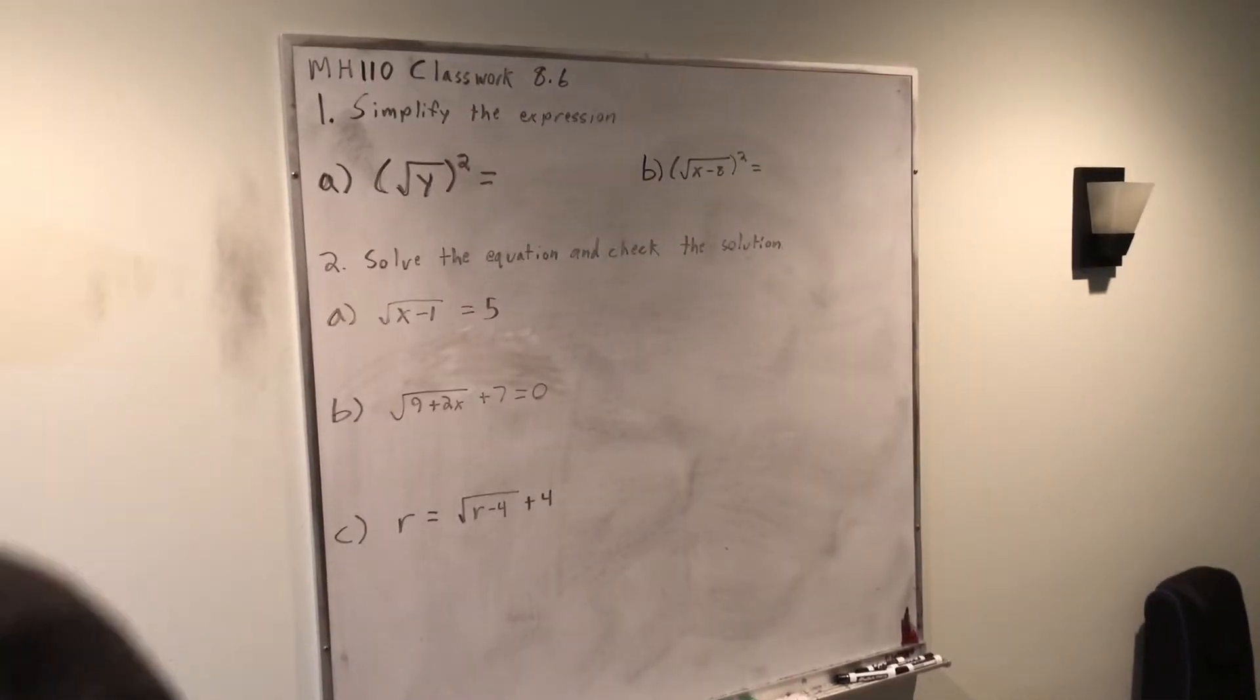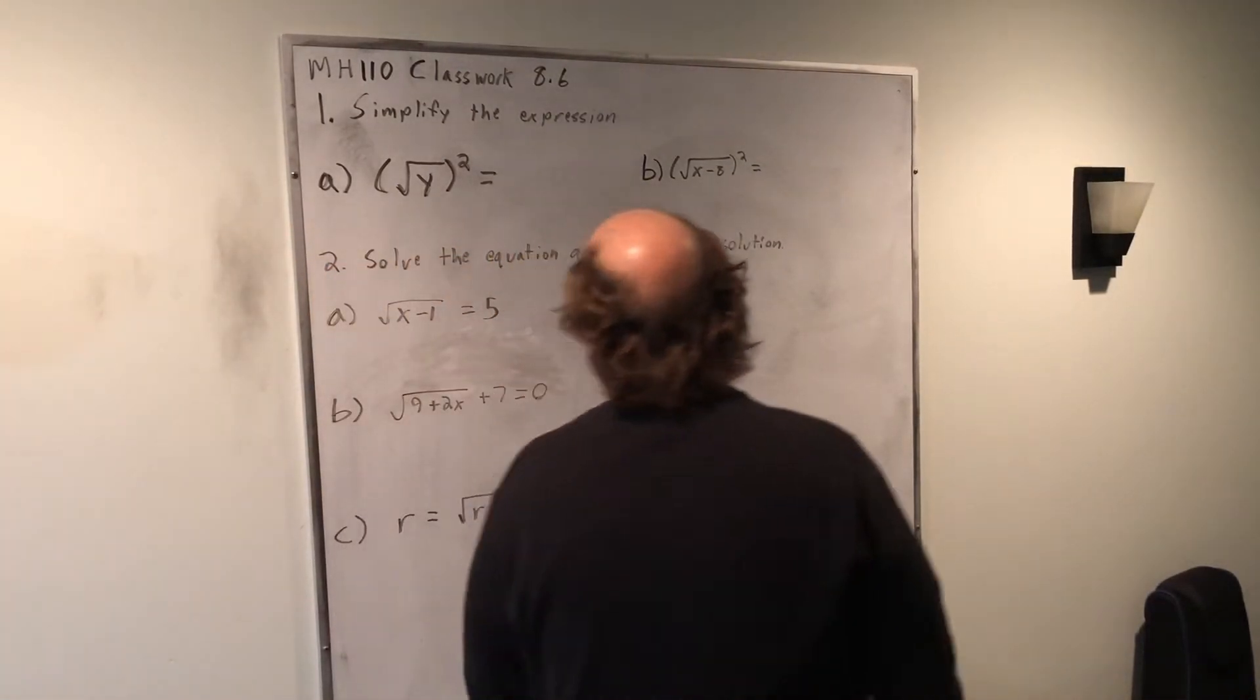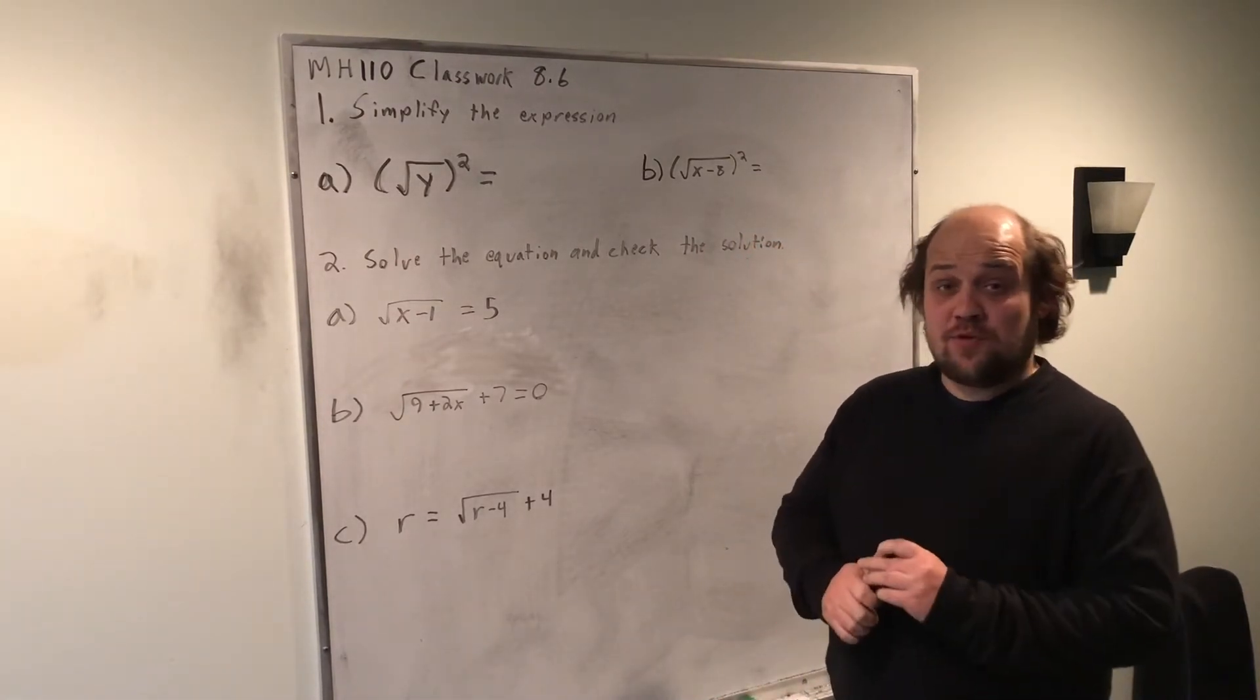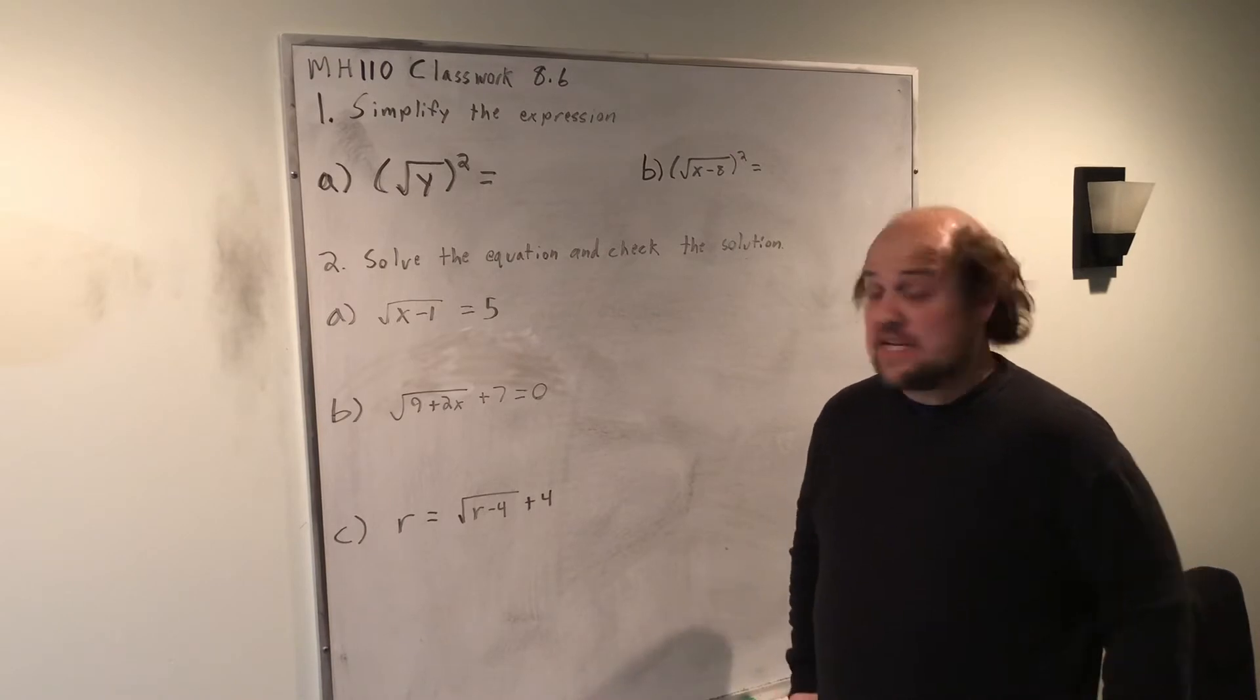In this classwork, we're learning how to solve equations that have roots in them. The first thing we've got to figure out is basically how we undo a root. The way that we undo a root is by squaring both sides.